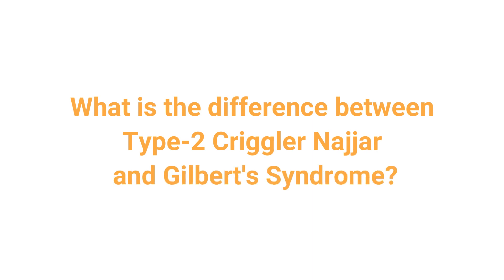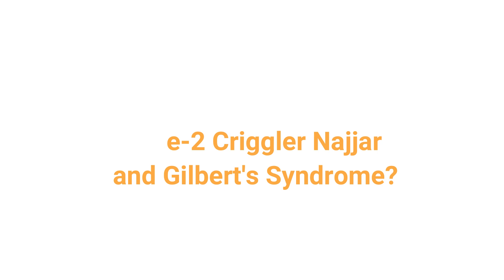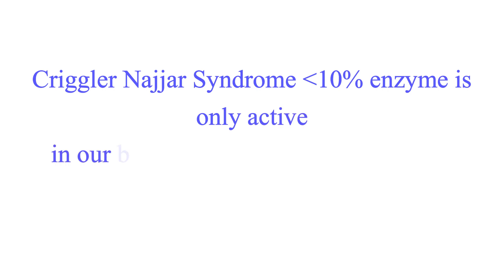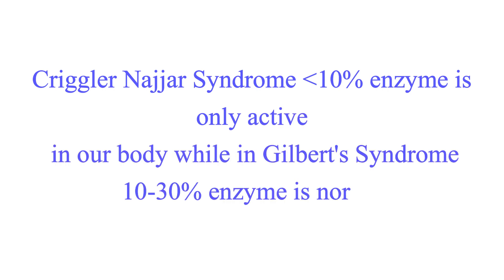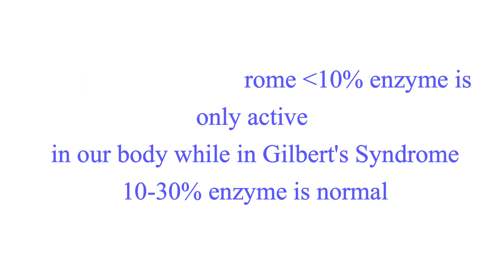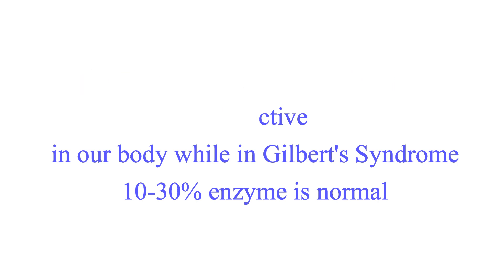What is the difference between type 2 Crigler-Najjar syndrome and Gilbert's syndrome? Type 2 is due to less than 10% enzyme available in the liver, while in Gilbert's syndrome, 10–30% enzyme is present in the liver. To know more about Gilbert's syndrome, please refer to our previous video present in the description below.